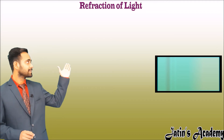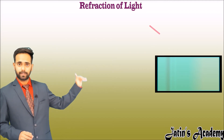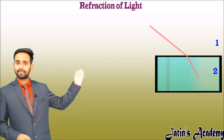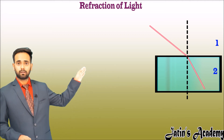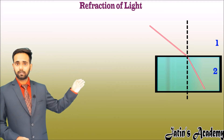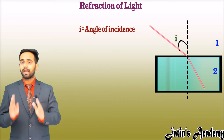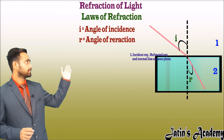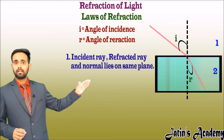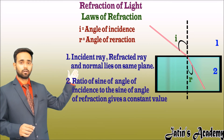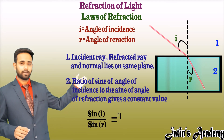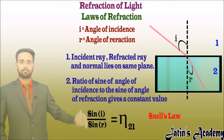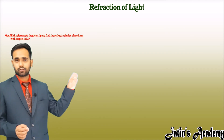Similar to reflection, in refraction the incident ray strikes the boundary between medium 1 and medium 2. If medium 2 is optically denser, the light ray bends towards the normal to become the refracted ray. The angle between the incident ray and the normal is the angle of incidence, and the angle between the refracted ray and the normal is the angle of refraction. The first law states that the incident ray, refracted ray, and normal lie in the same plane. The second law — Snell's Law — states that sin(i)/sin(r) equals a constant, which is the refractive index.